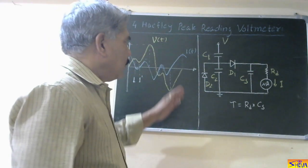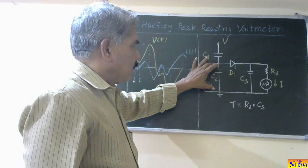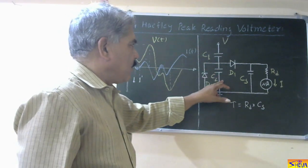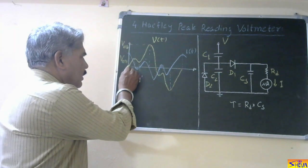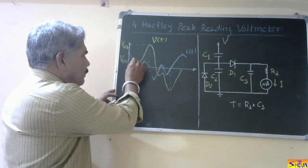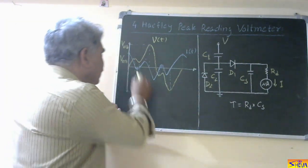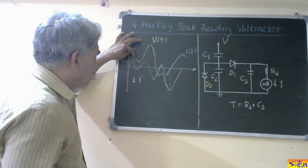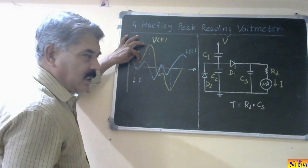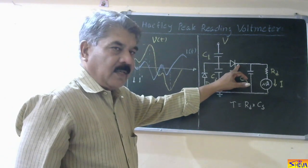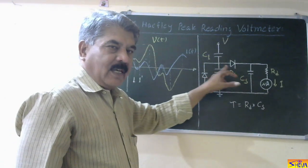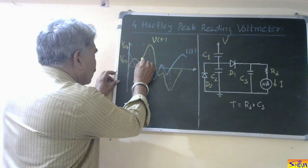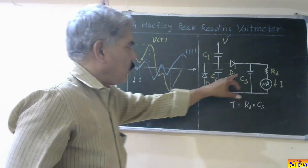Now let us see how it works. During the positive half cycle, when we apply the voltage, a sample of the voltage appears across C2 of the capacitance potential divider. During the positive half cycle, D1 conducts. As the voltage is increasing, D1 conducts and Cs is charging. So first, Cs charges to Vm1. After this point, the voltage is reducing. So the voltage at this capacitor is Vm1, but the voltage at the source becomes less than Vm1, so automatically diode D1 becomes reverse biased and will not conduct.